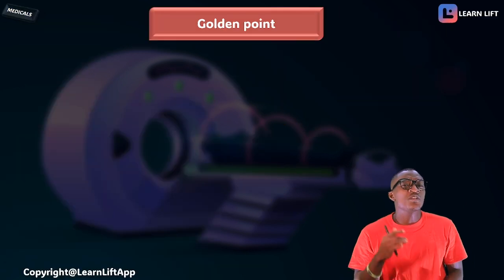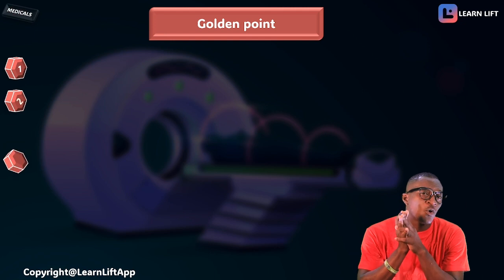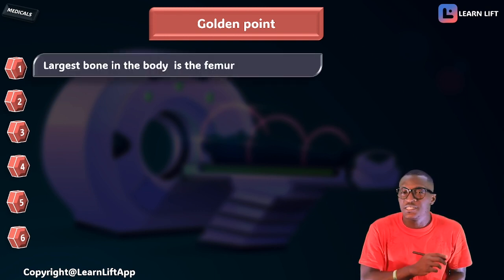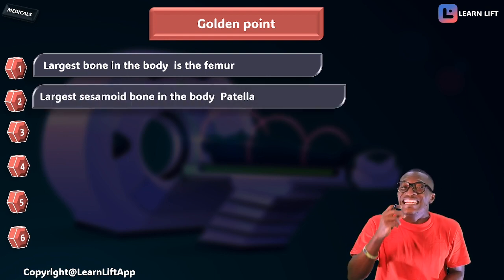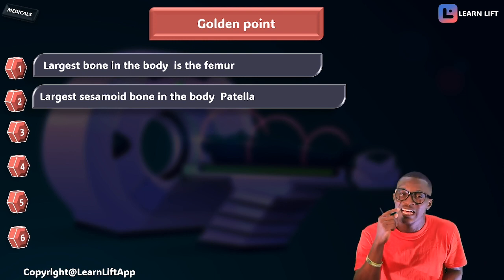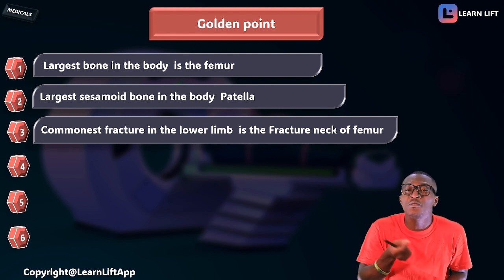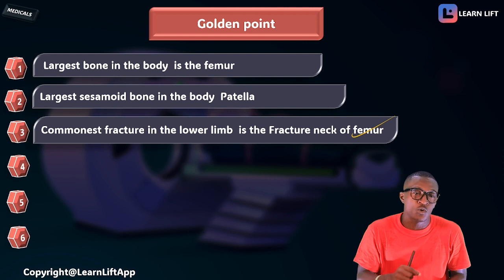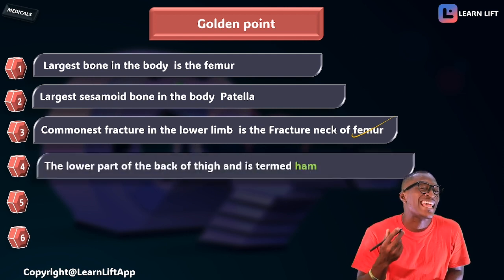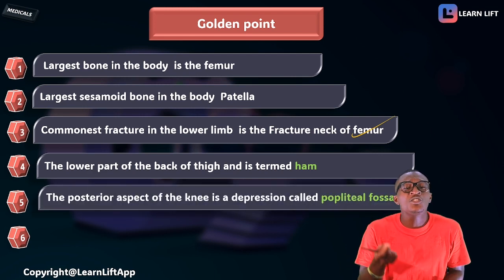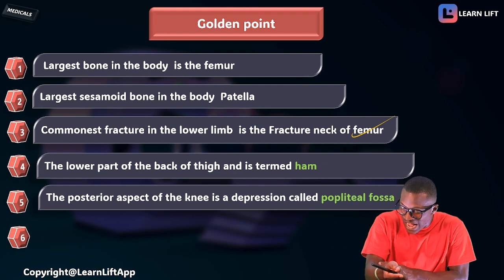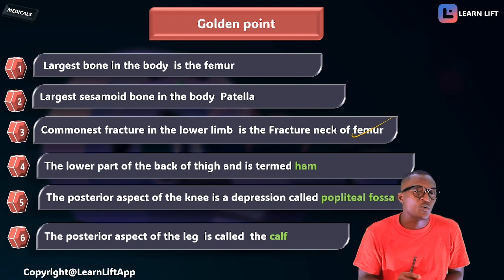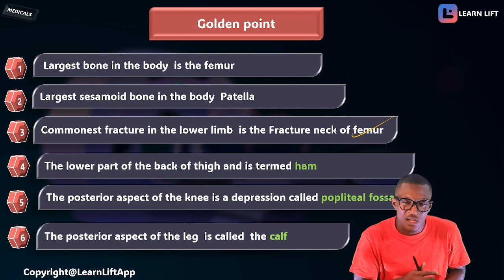Now for the six golden points. One: the largest bone in the body is the femur. Two: the largest sesamoid bone is the patella. Three: the commonest fracture point is the neck of the femur. Four: posterior aspect of the thigh is called the ham; posterior aspect of the knee joint is called the popliteal fossa (cubital fossa for the elbow); and posterior aspect of the leg is called the calf. Remember: ham, popliteal fossa, and calf.